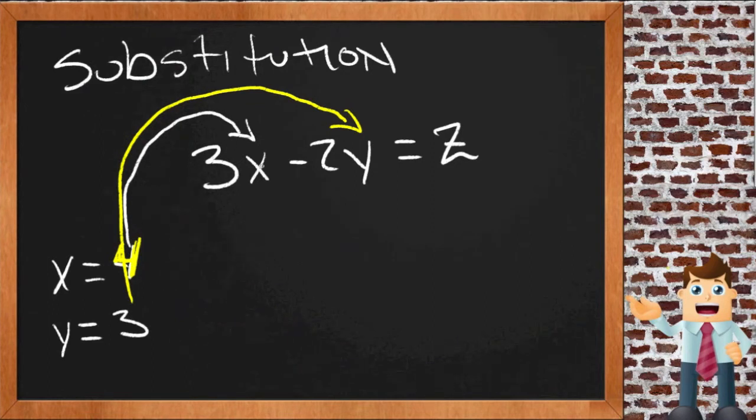Then we can put a 4 in place of this x here, and we get 3 times 4 instead of just 3 times x, and then we get minus 2 times 3 instead of just y, and that equals z.